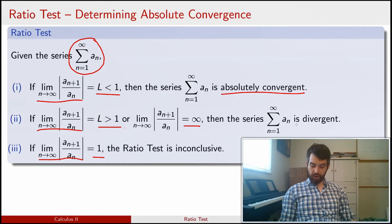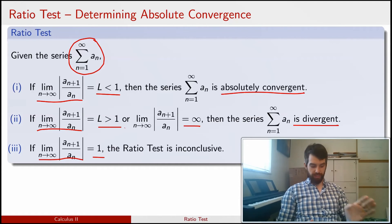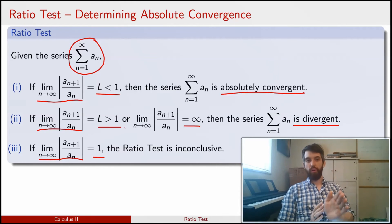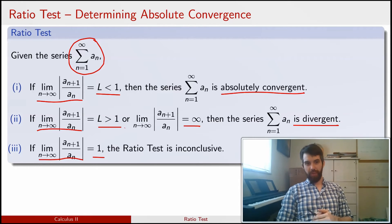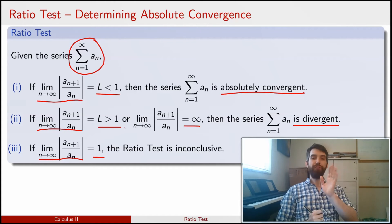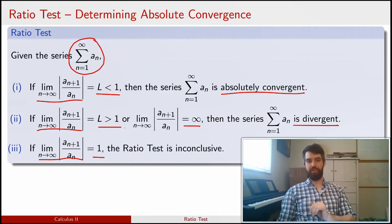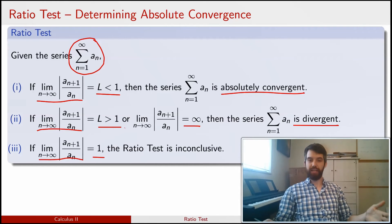If the limit is greater than 1, then the series diverges. These two cases mirror what happens with a geometric series. However, when the limit equals exactly 1, unlike a geometric series which would clearly diverge, the limiting case has enough wiggle room that the series might either converge or diverge — we simply don't know. The ratio test gives no information in this case, and we must use a different test.